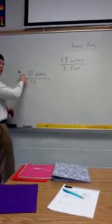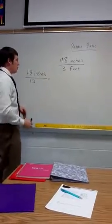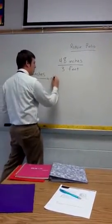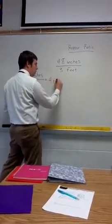Does anybody know how many times twelve goes into forty-eight? Levi does? Four. Four times. So forty-eight inches is equivalent to four feet.